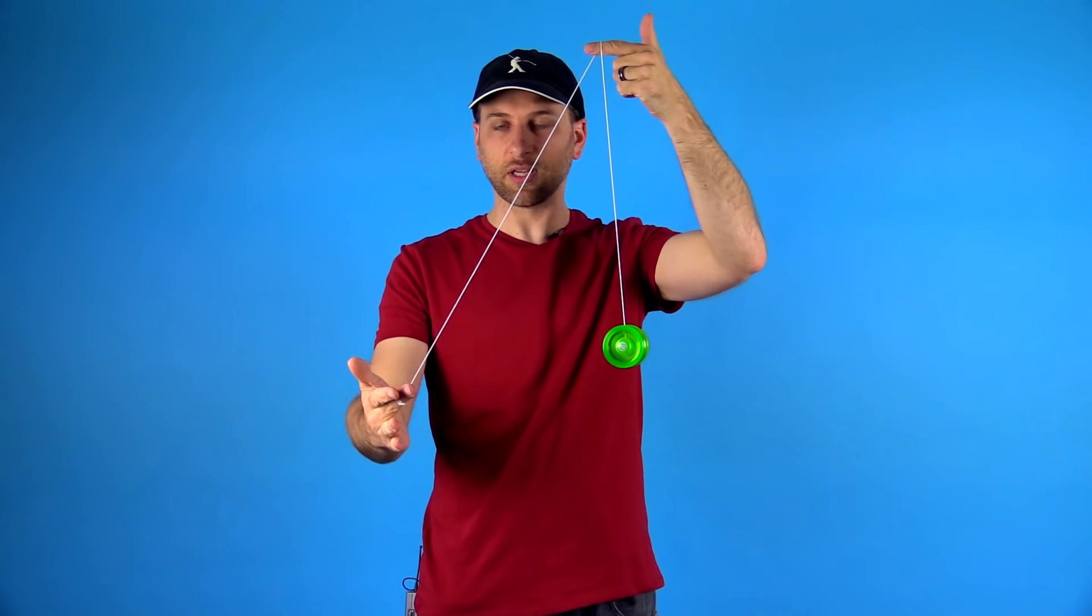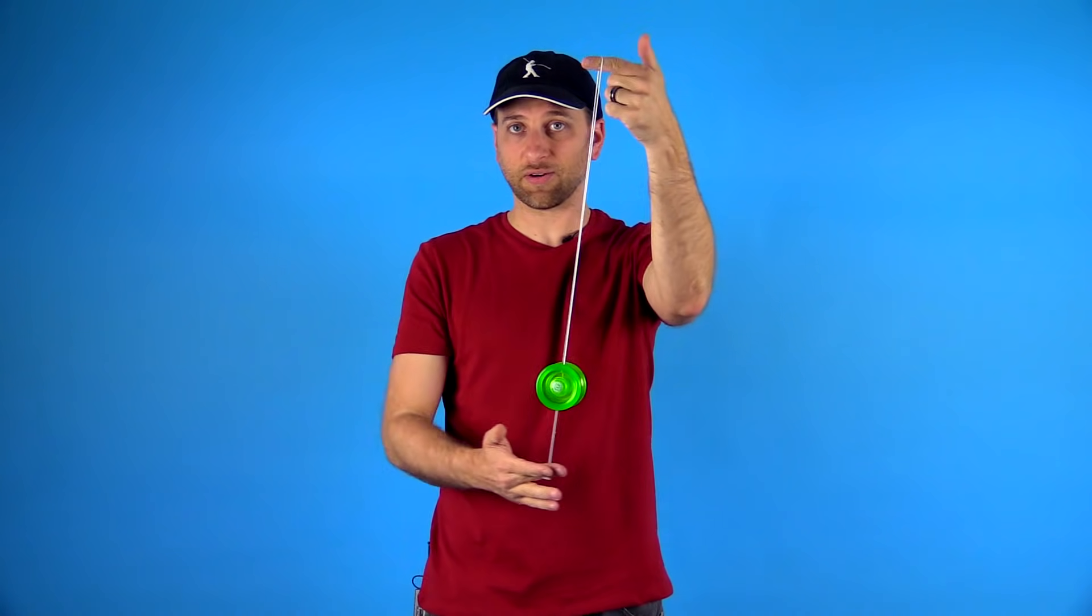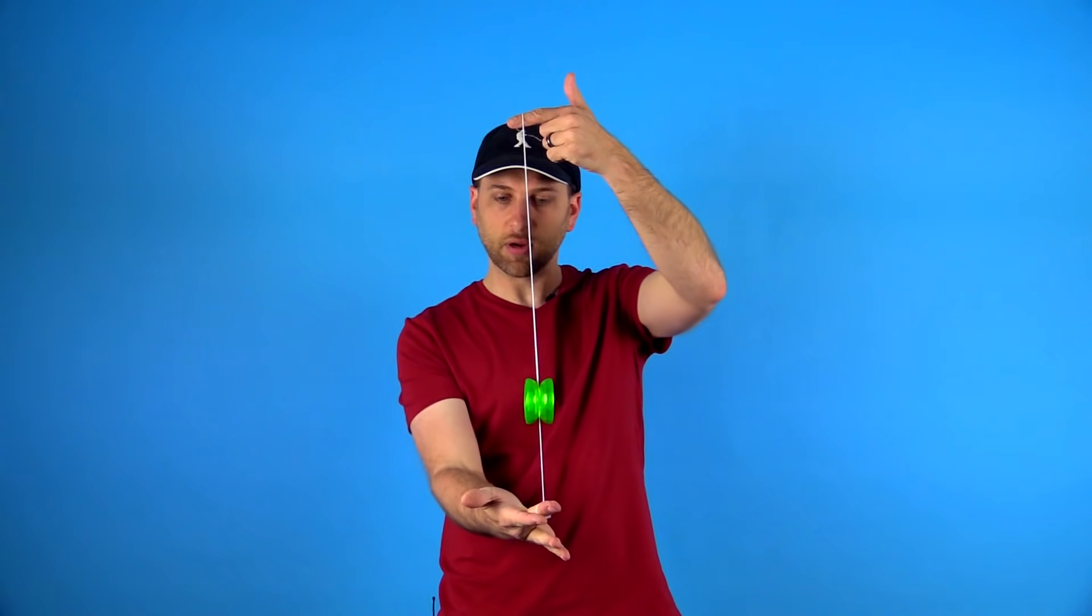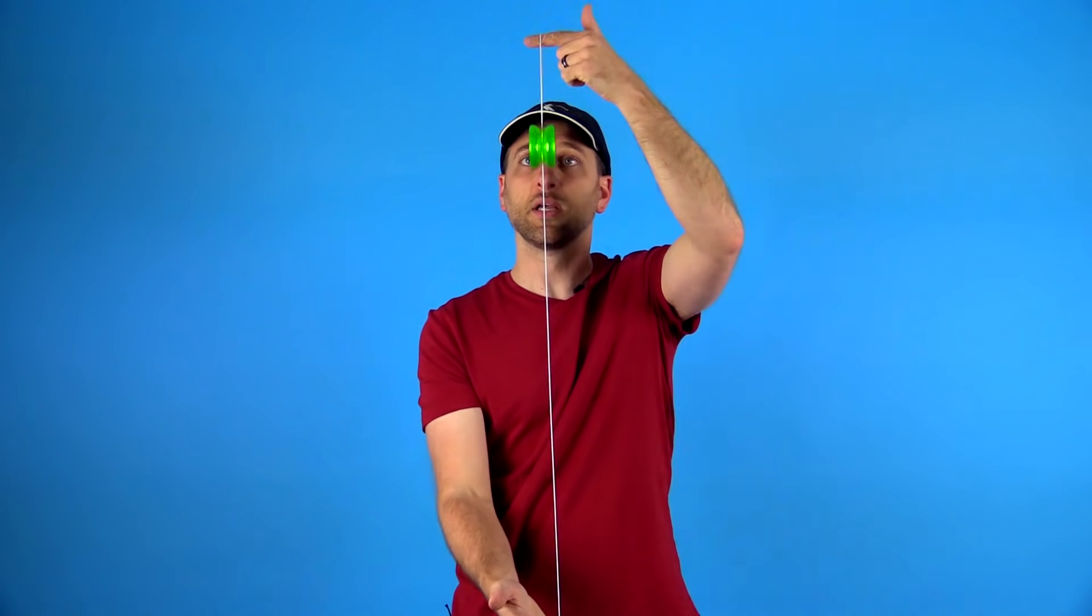But as soon as you start to get your hands so that they're not perfectly vertical, then the string is going to push into the side of the yoyo, and that causes it to twist and turn a little bit. So if that problem is happening to you, just be really conscious and focused on keeping your hands straight up and down as you pull them apart, and that will make the trick work a lot better.